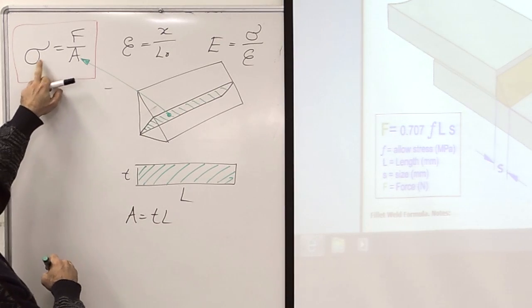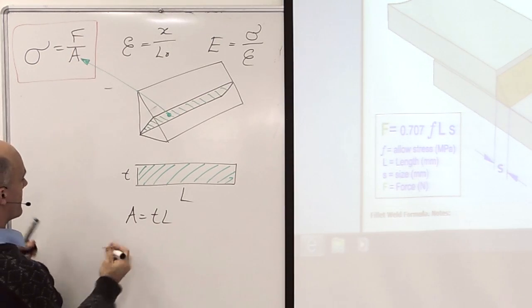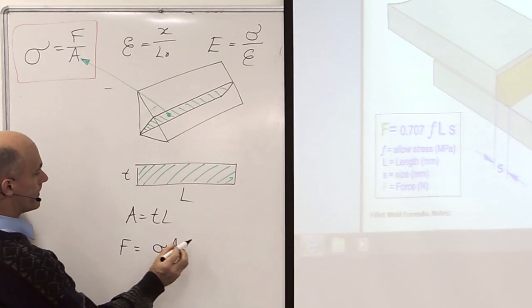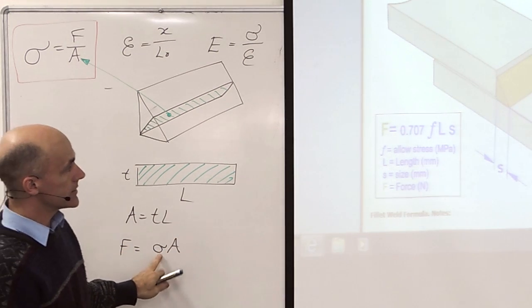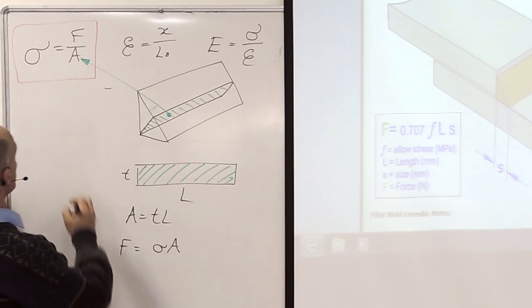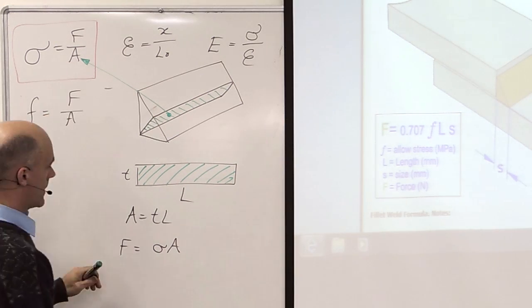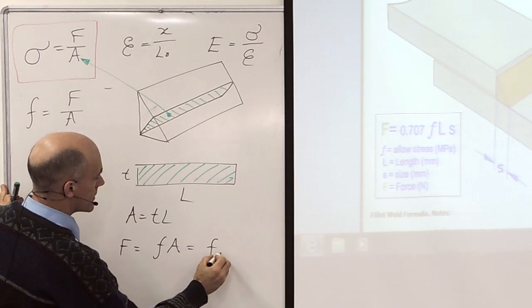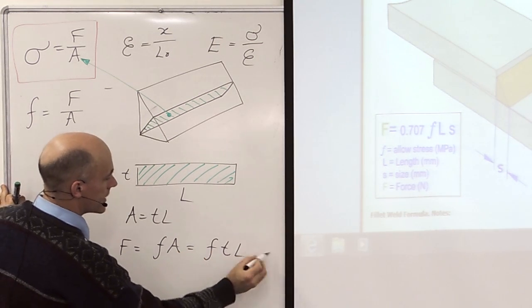So I'm trying to work out how much force this can hold. So force from here equals stress times area. Stress is the stress I'm allowed in the weld. Or I could use this symbol. And area is TL. So that's equal to stress times thickness times length.